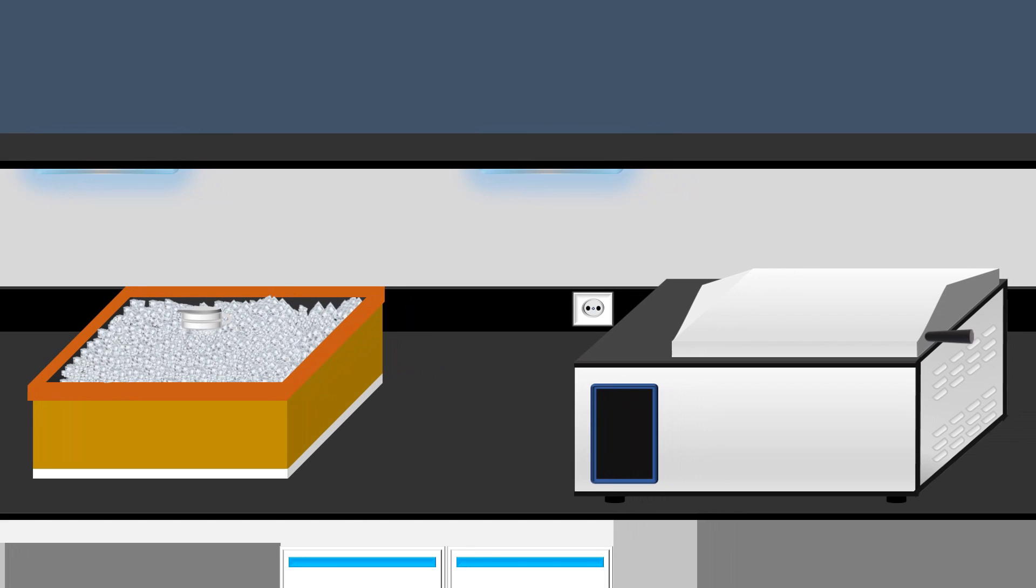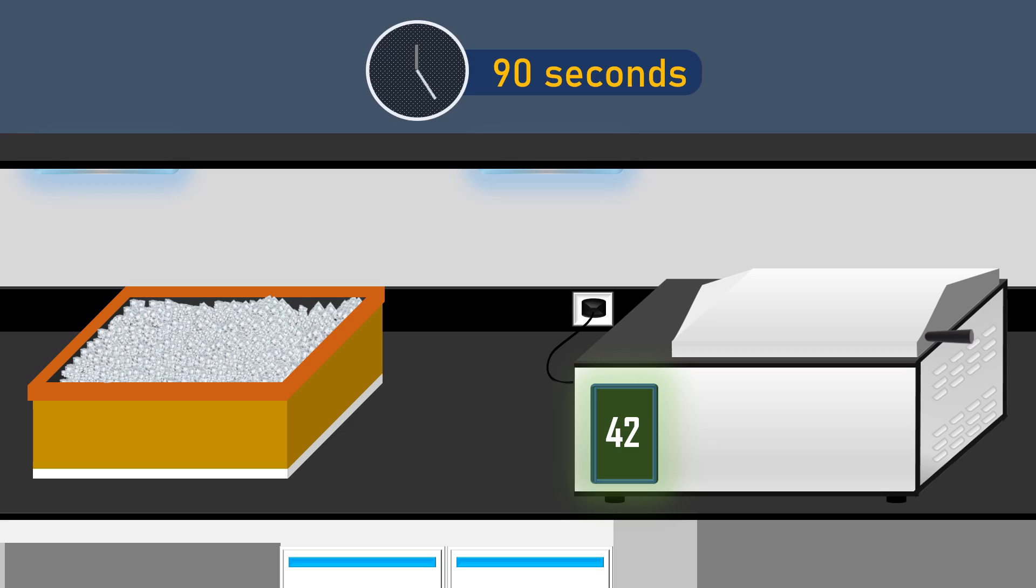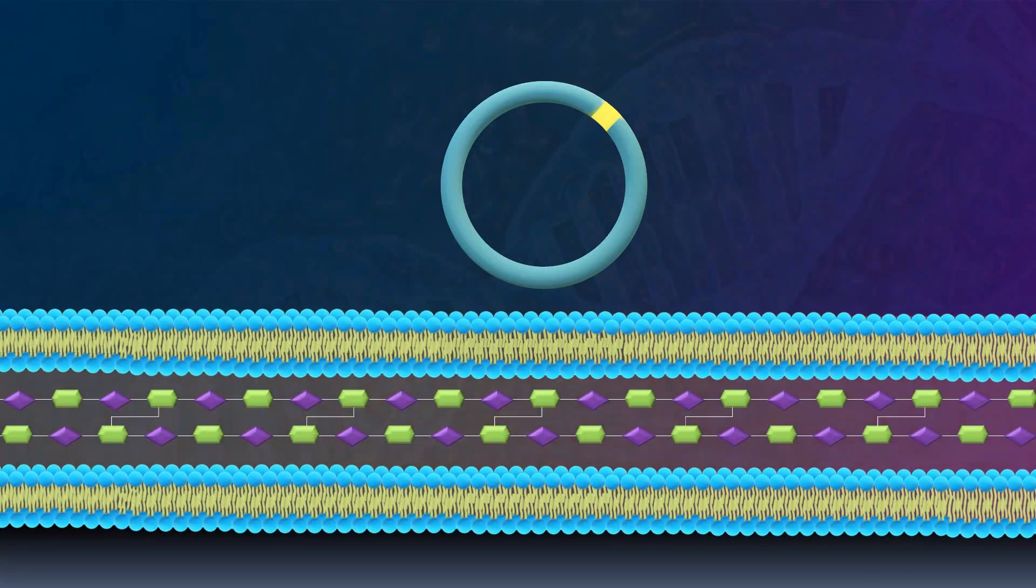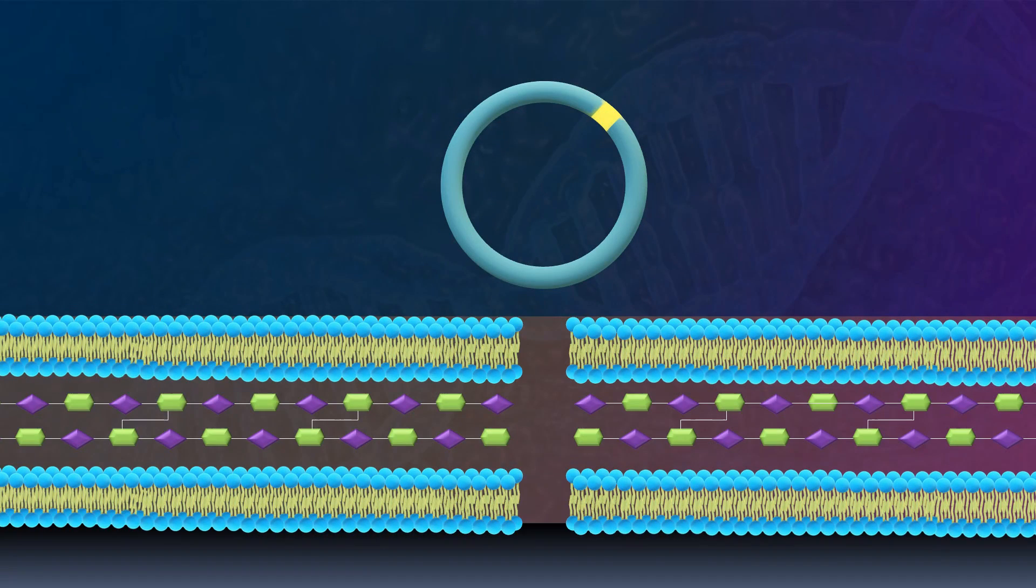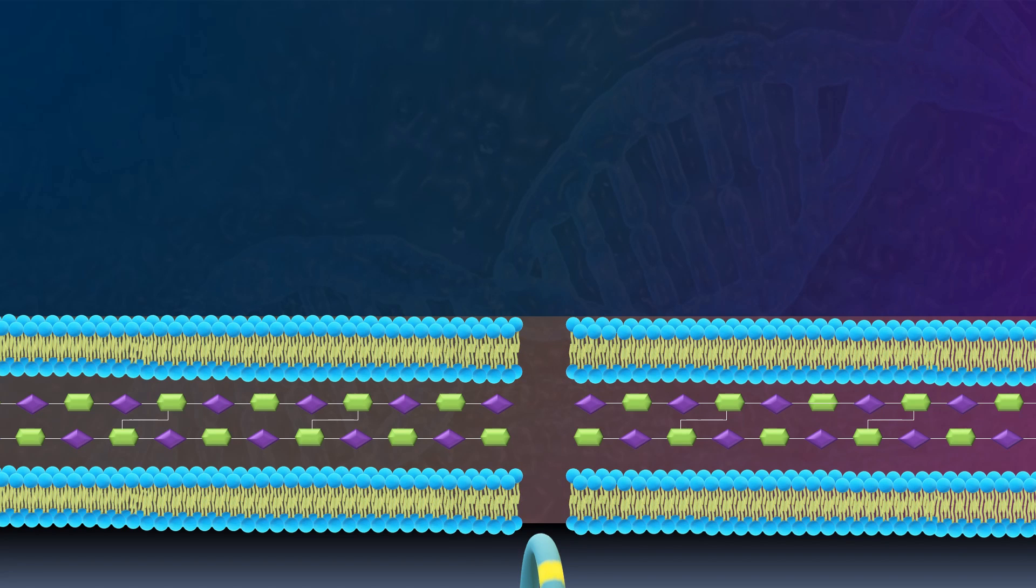To perform the heat shock, the tube is removed from the ice and immediately incubated at 42 degrees Celsius for 90 seconds. The sudden temperature shift induces thermal stress on the bacterial cells, leading to the destabilization of the cell membrane and the creation of temporary pores or gaps. Now, the plasmid DNA is able to traverse the weakened membrane and enter the bacterial cell.